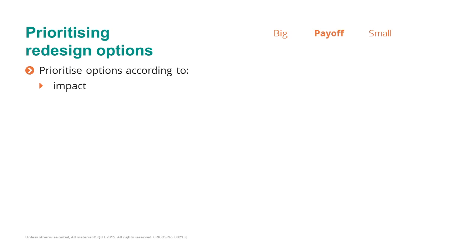Redesign options should be prioritised in general with respect to two dimensions. The first dimension is the impact of implementing that redesign option — meaning the improvement or decrease of performance it would bring along each of the dimensions of the Devil's Quadrangle. The second dimension is the difficulty of implementing a particular redesign option, with some options requiring only small reorganisations achievable by simply changing instructions given to process workers.